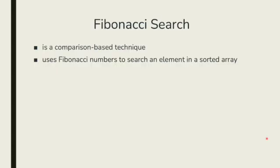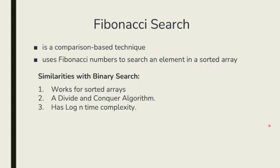Fibonacci Search is a comparison-based technique. We use a Fibonacci number to search for an element in a sorted array. The similarity with binary search: both work on a sorted array, both are divide-and-conquer algorithms, and both have O(log n) time complexity.